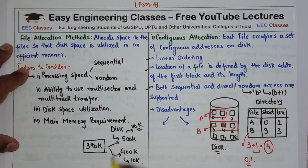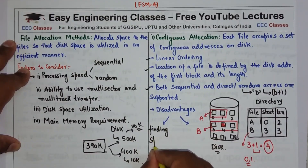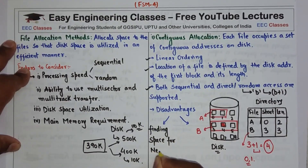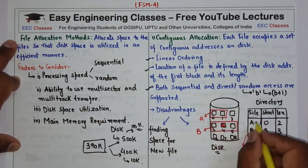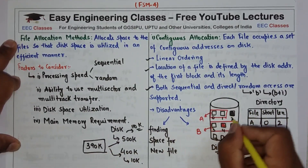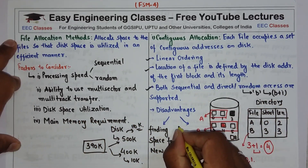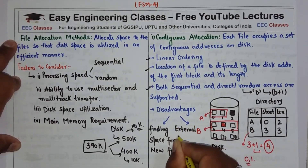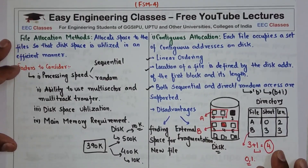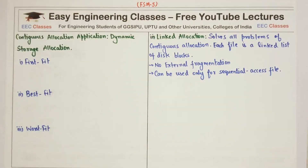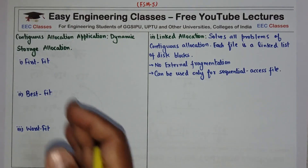There are certain disadvantages of contiguous allocation. The first disadvantage is that finding space for a new file is very difficult, because you have to keep track of the free blocks. The second disadvantage — and this is the biggest — is external fragmentation. One variation of contiguous memory allocation is dynamic storage allocation, and as we have seen, there are three techniques: first fit, best fit, and worst fit.